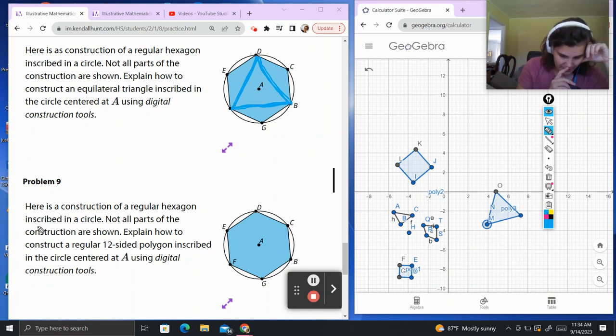Problem 9. Here is a construction of a regular hexagon inscribed in a circle. Not all parts of the construction are shown. Explain how to construct a regular 12-sided polygon inscribed in the circle centered at A using digital construction tools. We have our six-sided polygon inscribed in a circle. We now need to figure out how to make a 12-sided polygon inscribed.